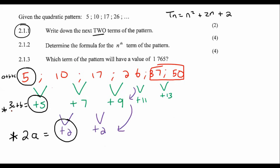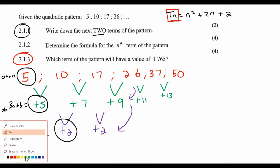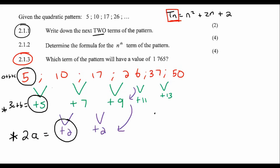So that is how you solve a quadratic number pattern. Now I'm quickly going to go through the next one: which term will have a value of 1,765? So what you do is you put 1,765 into the formula, giving us 1765 equals N squared plus 2N plus 2. I'm going to go very fast because this is easy.